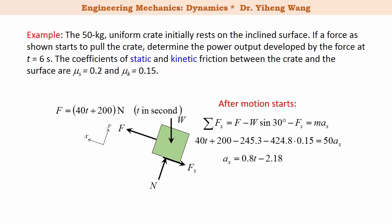According to kinematics, this also equals dv/dt. Therefore at t equals 6 seconds we can evaluate the magnitude of the applied force, and we can also evaluate the velocity of this crate from kinematics, which equals 4.178 m per second. Therefore at this point the power generated by this force equals the magnitude of the force times the velocity of the crate to be 1.84 kilowatt.